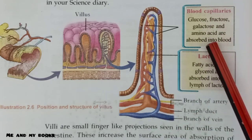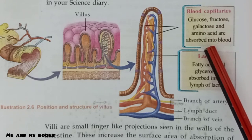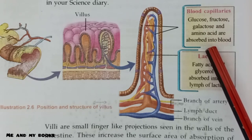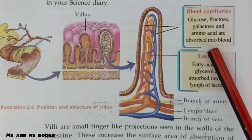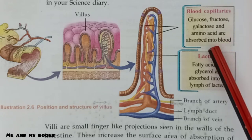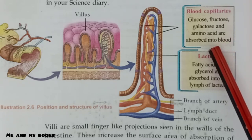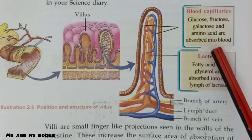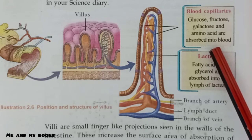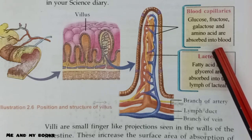The blood capillaries and lacteals each have a function. Glucose, fructose, galactose, and amino acids are absorbed into the blood. These water-soluble nutrients move from the blood capillaries inside the villi, then are transported to the body.